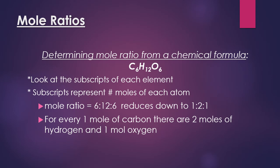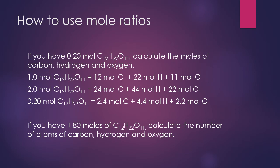Now let's look at mole ratios. We've touched on this before with chemical formulas. The subscripts after each element tell us how many atoms are present, but they also tell us the ratio. For the formula C₆H₁₂O₆, we can say there are six atoms of carbon, 12 atoms of hydrogen, and six atoms of oxygen — or equivalently, six moles of carbon, 12 moles of hydrogen, and six moles of oxygen. That's a 6:12:6 ratio, which reduces to 1:2:1.